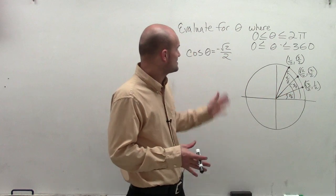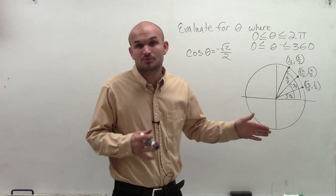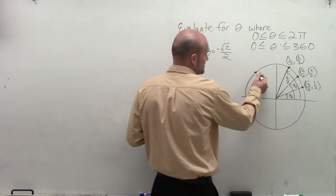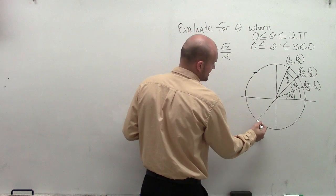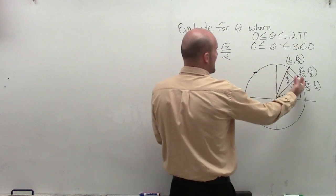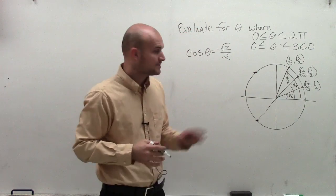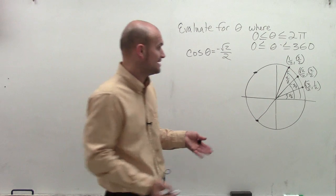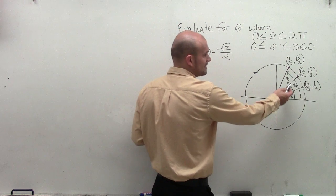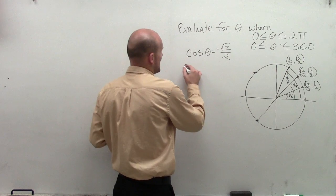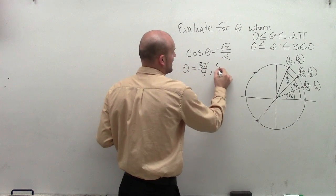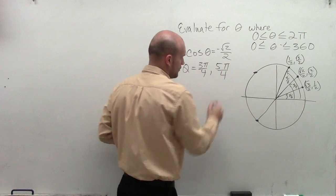Now, the problem is I'm looking for a negative square root of 2 over 2. So I need to be able to determine what is the reflection point here. What are these two points when x is going to be negative? So there's going to be two points on my unit circle when my cosine value is going to be negative. So if at pi fourths it's going to be positive, what I notice is at the angle of theta equals 3 pi over 4 and 5 pi over 4.